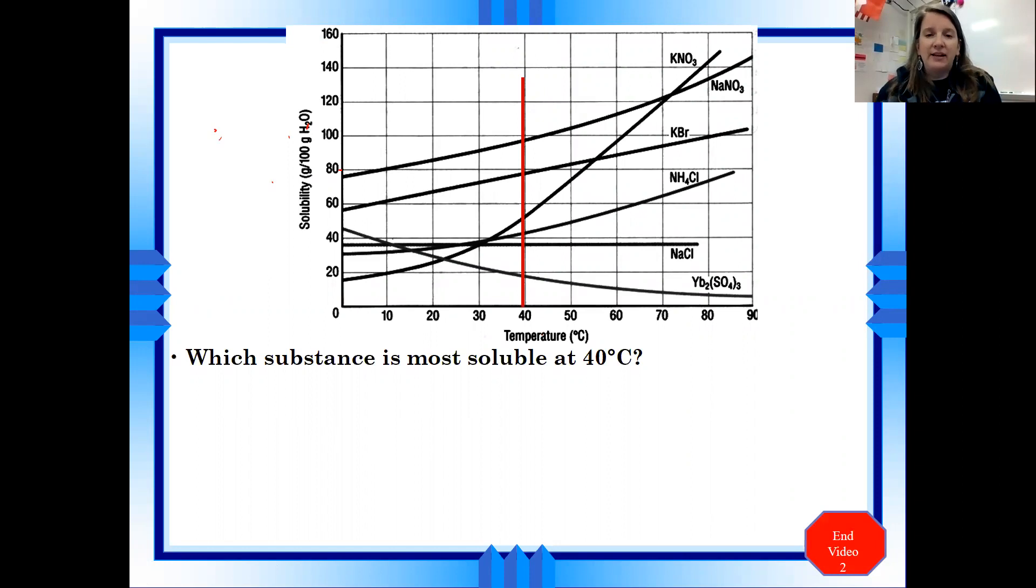Remember temperatures on the x-axis, and you're looking for the highest line, because the highest line means that I can dissolve the most amount of solute at that temperature. So the one that's the highest line here is going to be your sodium nitrate, NaNO3. You just want to make sure that you follow this line around to make sure you're reading it correctly, and you know which substance it's talking about.